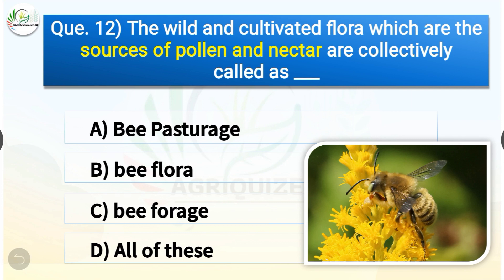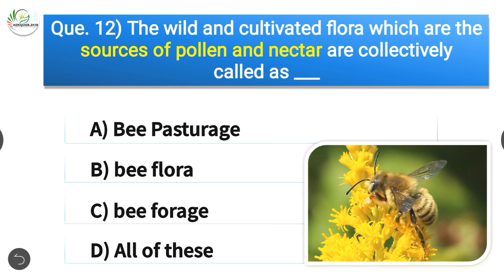Question number twelve: The wild and cultivated flora which are the sources of pollen and nectar are collectively called as what? The options are: bee pasturage, bee flora, bee forage, or all of these. The correct answer is option D — all of these. The wild and cultivated flora which are the sources of pollen and nectar are collectively called bee pasturage, bee flora, and bee forage.